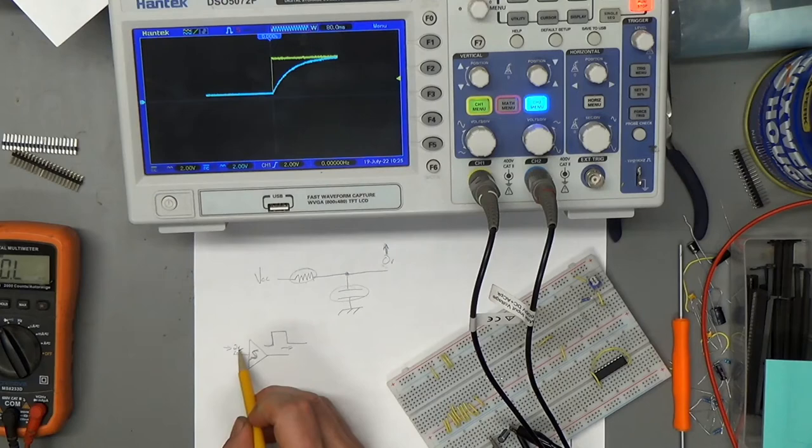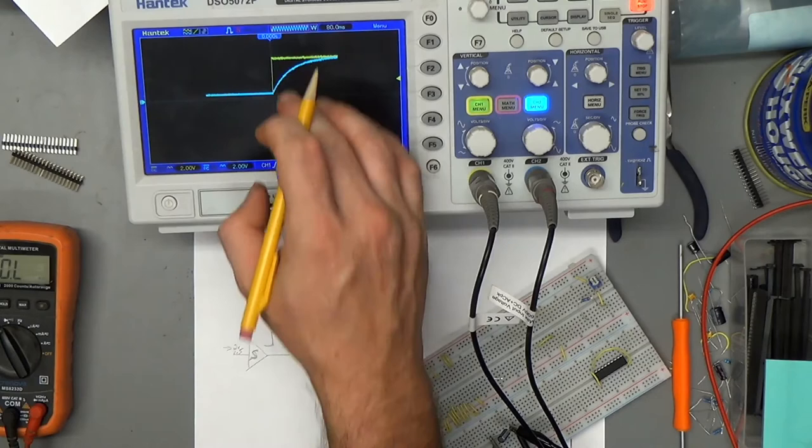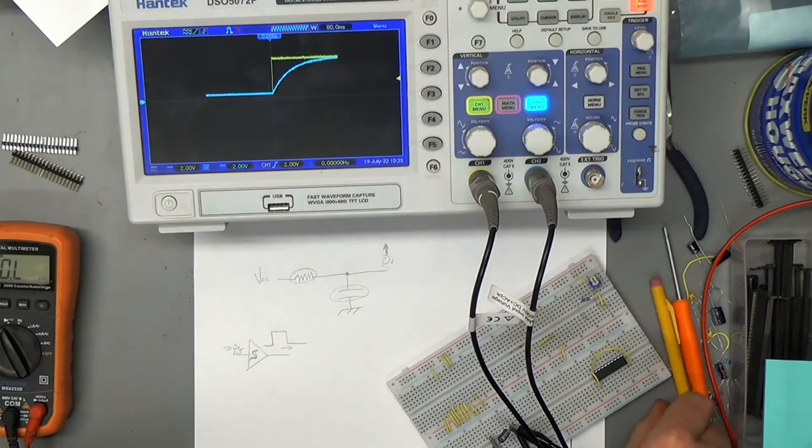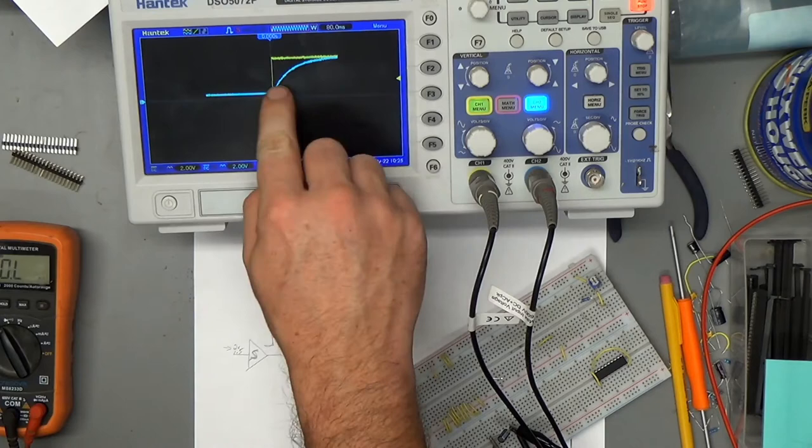So the voltage rises until it surpasses the trigger voltage of the Schmidt trigger and the output goes high. But then for that output to go low again, it has to come back down lower than it was when it started with - not a lot lower, but a little bit. And that filters that noise out there. The Schmidt trigger gates like that are very good for turning analog signals like this into nice crisp digital signals.